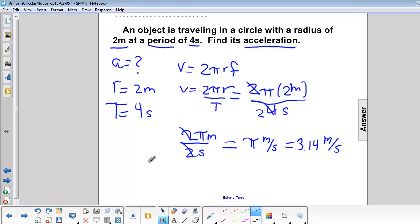We also know that acceleration is equal to v squared over r for circular motion. So if we have the velocity we can substitute that in.